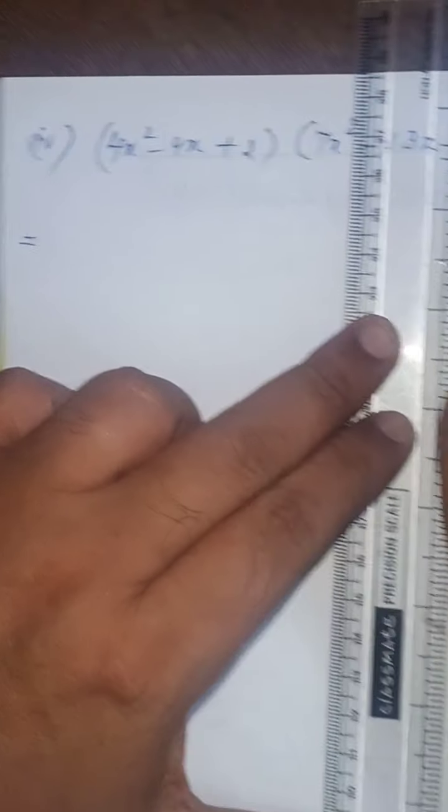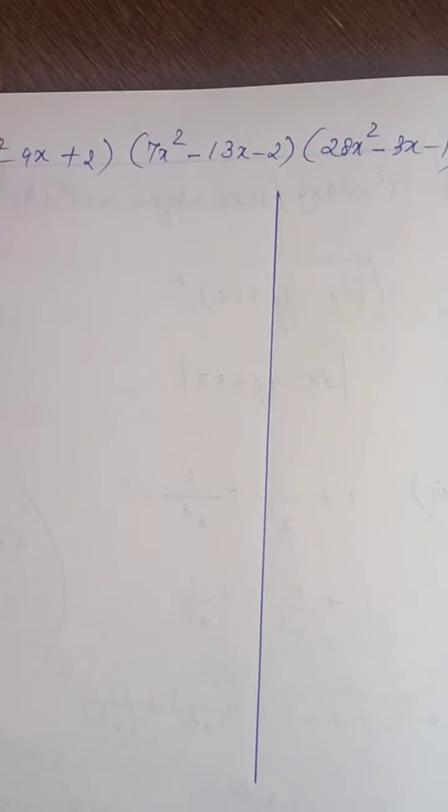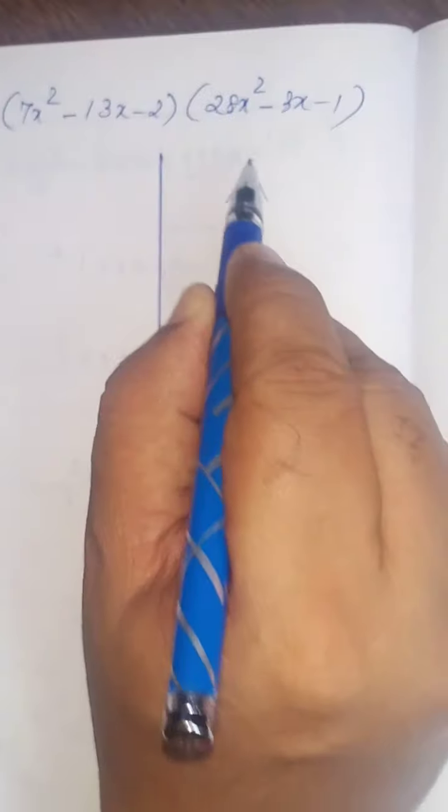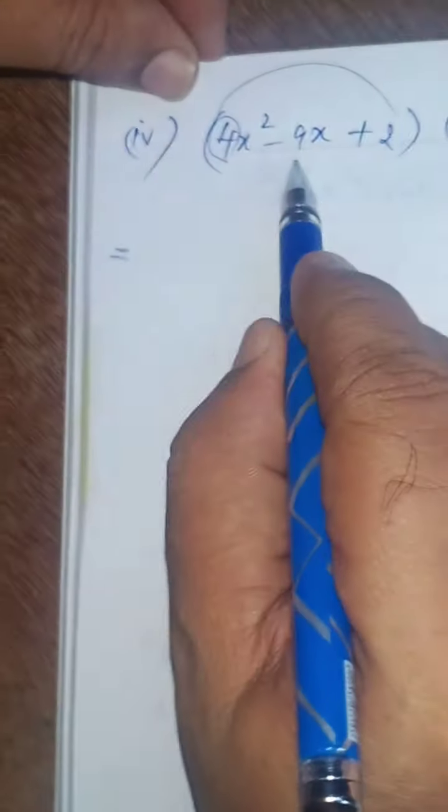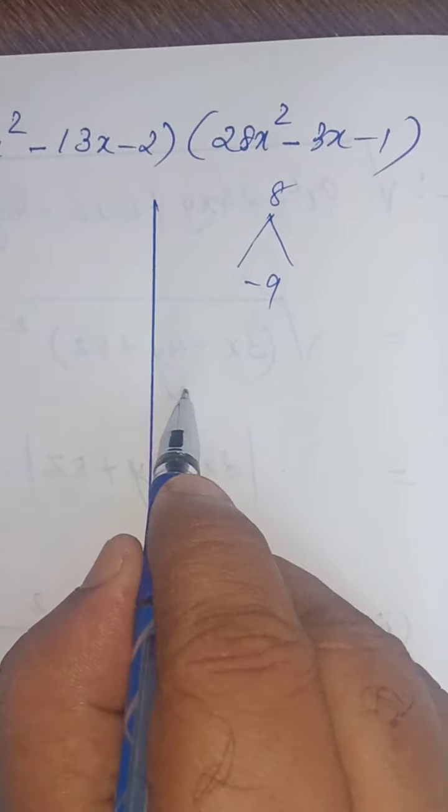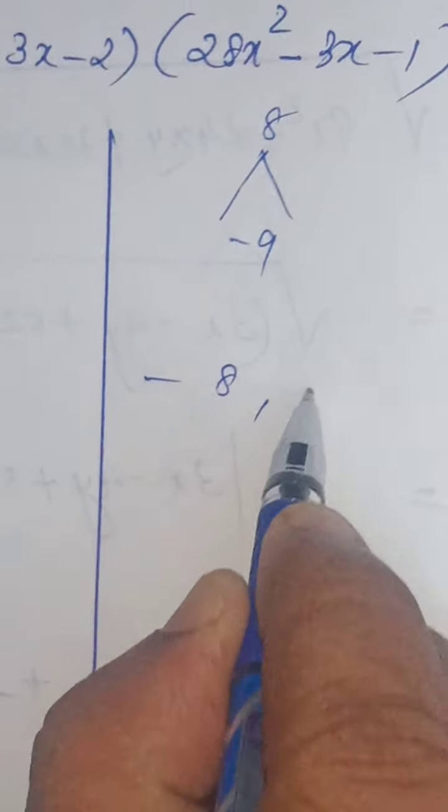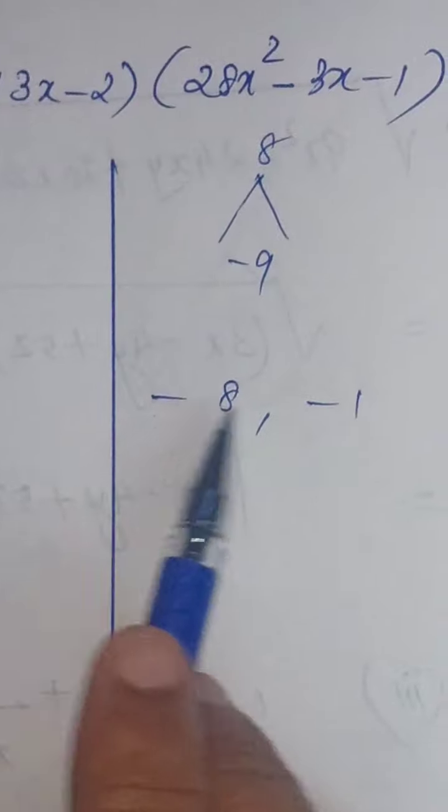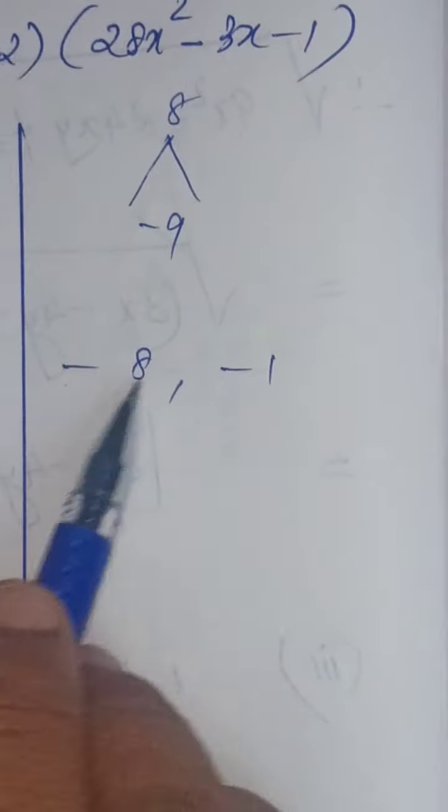4, 2s are 8, and coefficient of x that is equal to minus 9. The two numbers are product 8 and sum minus 9. The two numbers are minus 8 and minus 1. Add the two numbers minus 9. Multiply the two numbers minus into minus plus 8, 1s are 8.